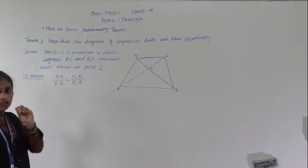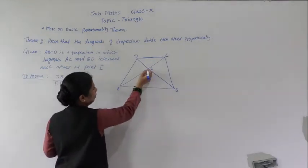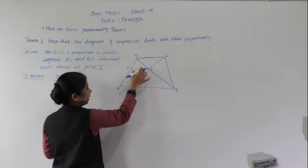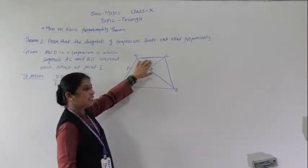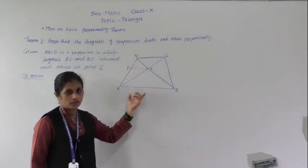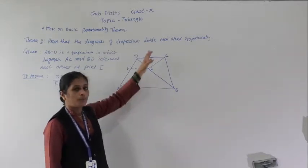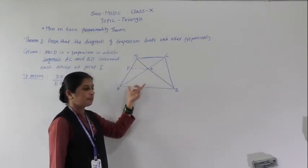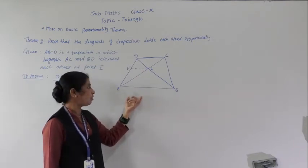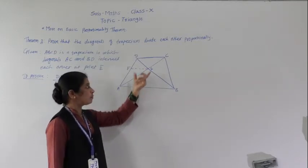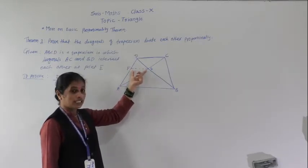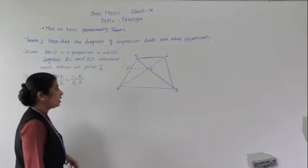For this purpose we make a construction: draw EF parallel to AB, which is also parallel to DC, intersecting AD at point F. Since EF is parallel to AB and DC — in a trapezium one pair of opposite sides is parallel — this construction gives us EF parallel to both AB and DC.